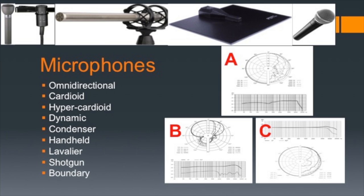A boundary microphone is also useful on a tabletop in front of a group of people speaking, because it picks up fairly uniformly for people to the left, right, and in front of it. Next to that is a Shure Beta 58, a descendant of the SM58 — a handheld cardioid microphone used for years in the music business. It has a windscreen on the outside and a foam screen inside to protect the microphone from wind noise and P-pops, also known as plosive sounds.